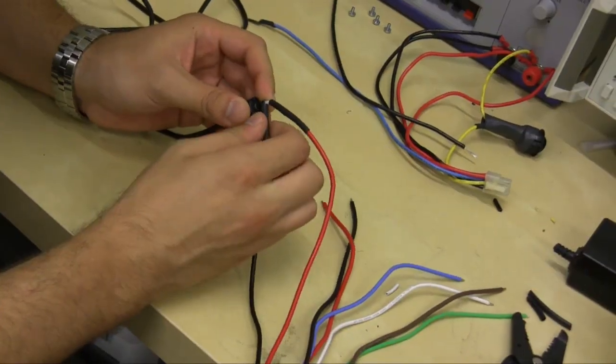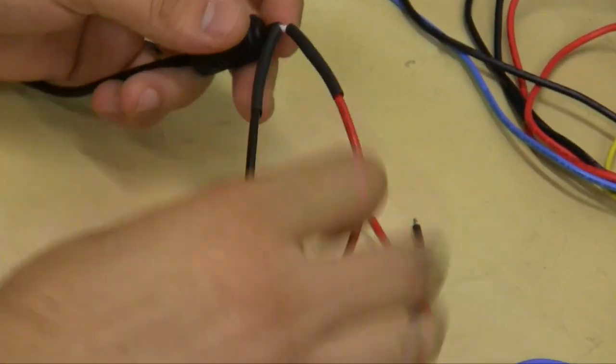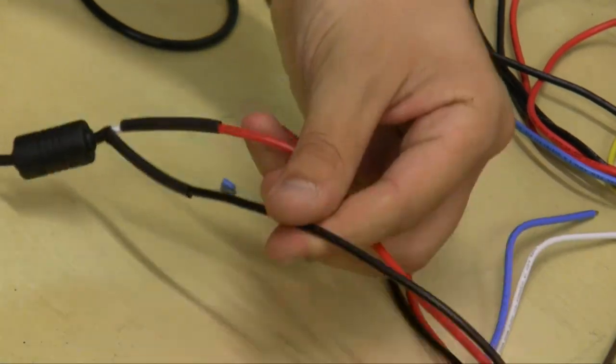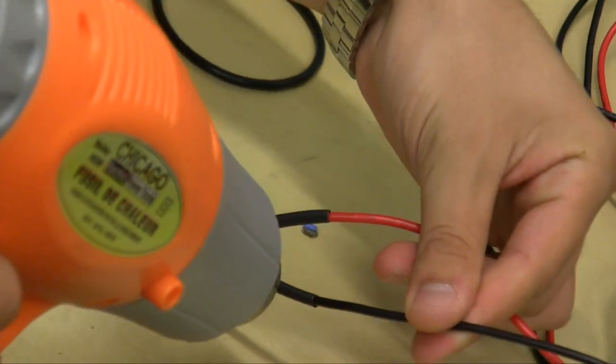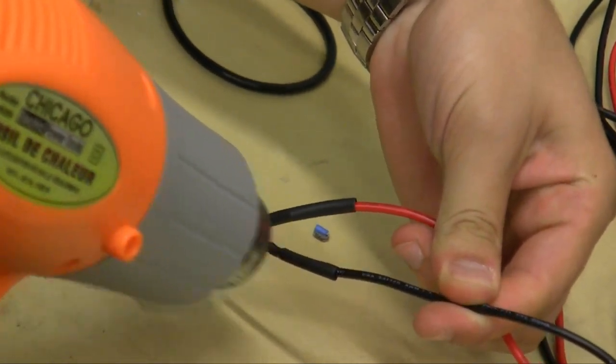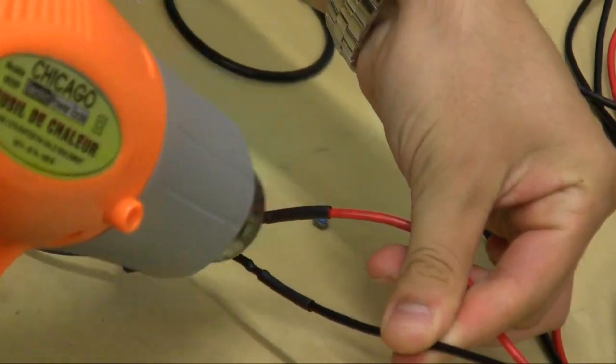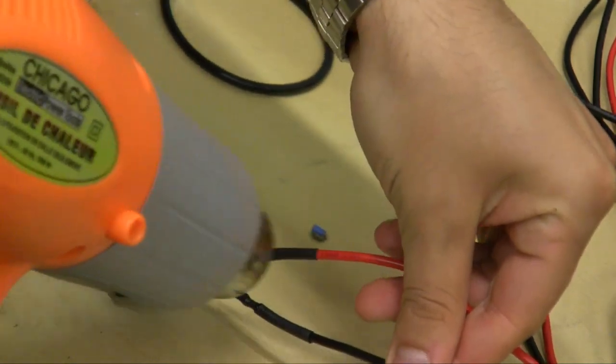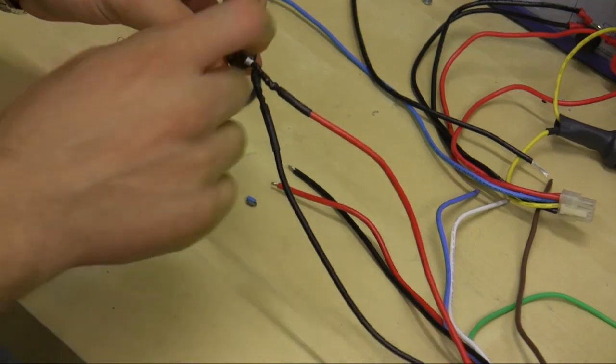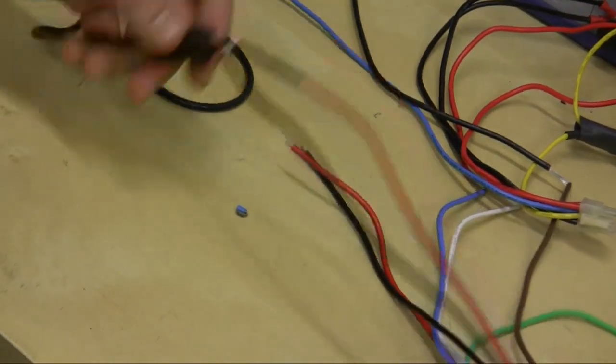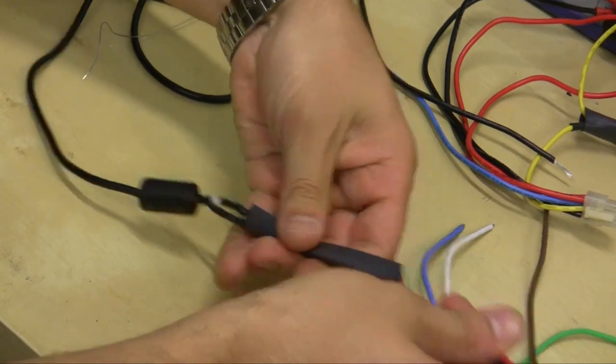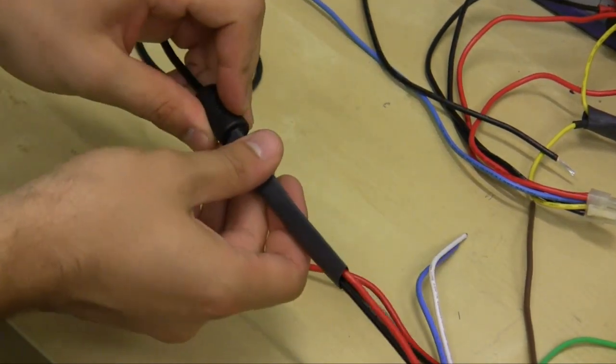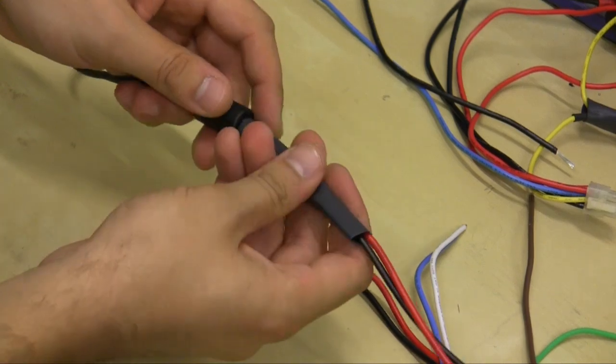So inspect it if it's okay. Pull the sleeve over and use the heat gun. There's still a little bit of ground kind of poking around. So what I want to do is actually isolate that too just so it doesn't rub against anything because you never know what you have in the car just floating around.